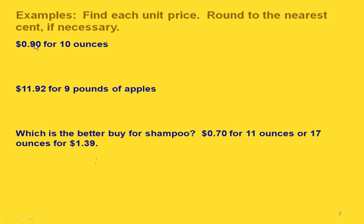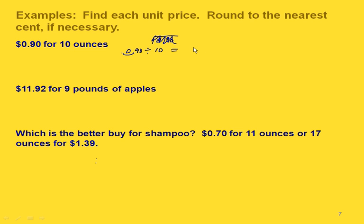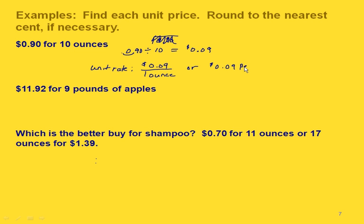For 90 cents for 10 ounces, we divide 90 cents by 10. Using the rule for dividing by powers of 10, one zero means moving the decimal point one place, giving us 9 cents. The unit rate is 9 cents per one ounce, or 9 cents per ounce.